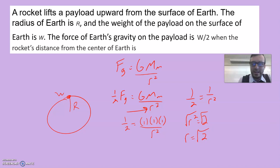If r² is equal to two, then we could say the radius is equal to square root of two. A lot of people would think, well, if you want to cut the weight in half, you just double the radius because as you get further away, gravity gets weaker. That's not how this works. Because of that r² in our force of gravity equation.